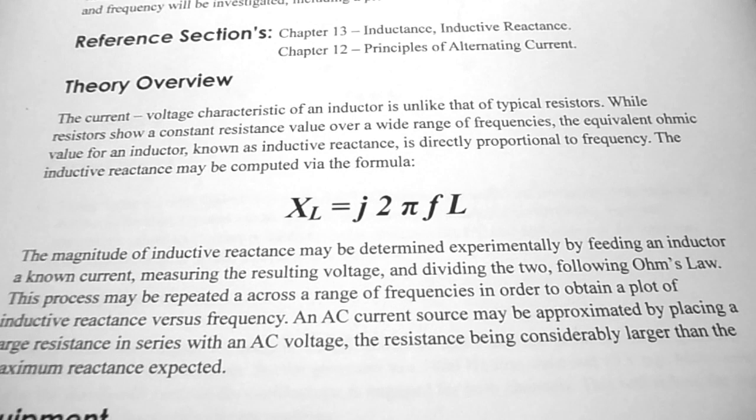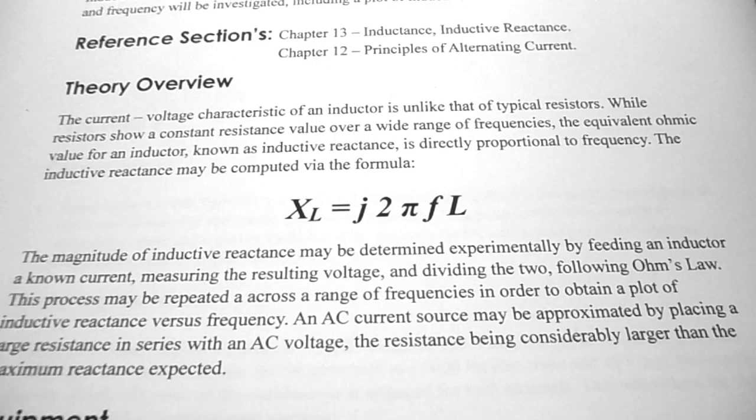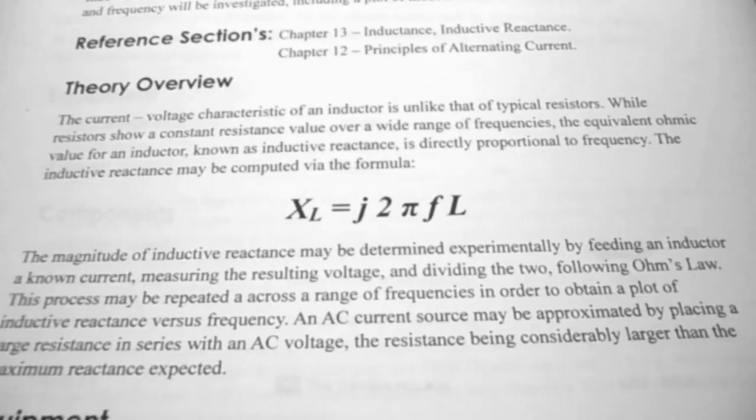Continuing on under theory overview, the magnitude of inductive reactance may be determined experimentally by feeding an inductor a known current, measuring the resulting voltage, and dividing the two following Ohm's law. An AC current source may be approximated by placing a large resistance in series with the AC voltage, the resistance being considerably larger than the maximum reactance expected.